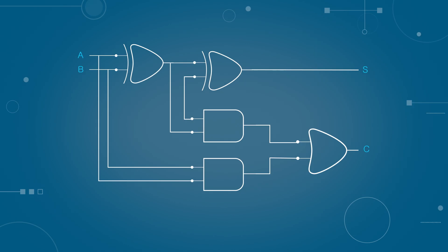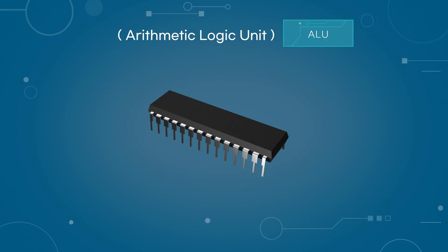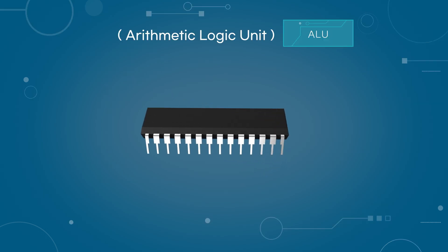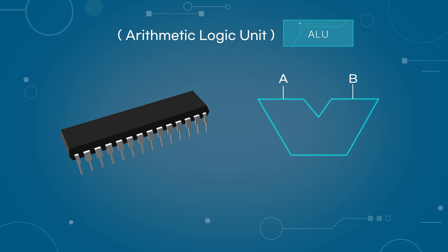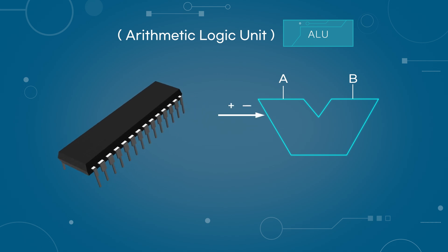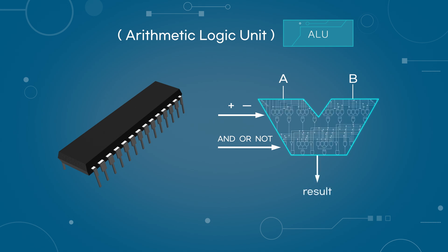Although addition gates capable of handling all numbers are more complex, this illustrates how transistors are used to construct logic circuits. A CPU contains an arithmetic logic unit, where the arithmetic unit performs operations like addition and subtraction, and the logic unit handles operations like AND and OR. Using the logic gates introduced earlier, an ALU can be built.